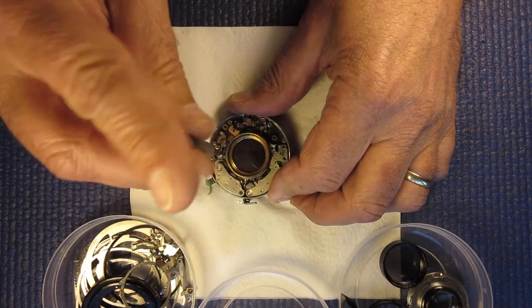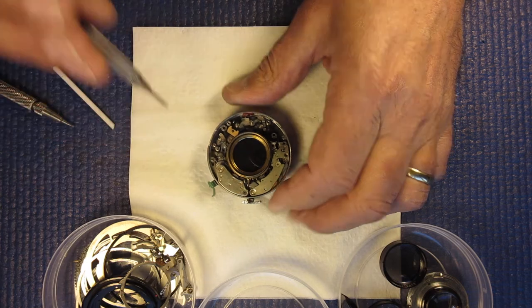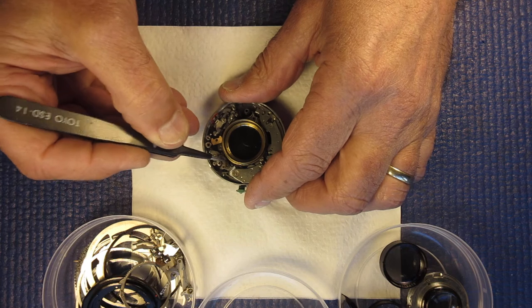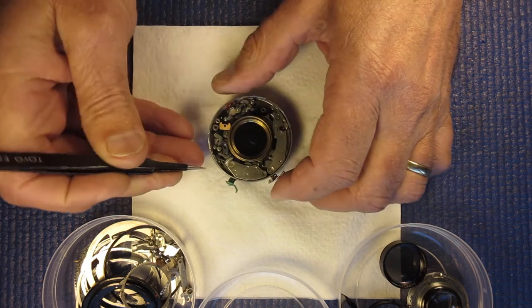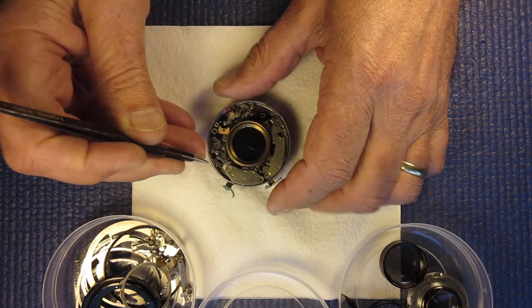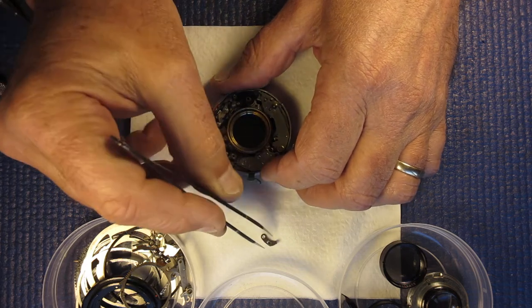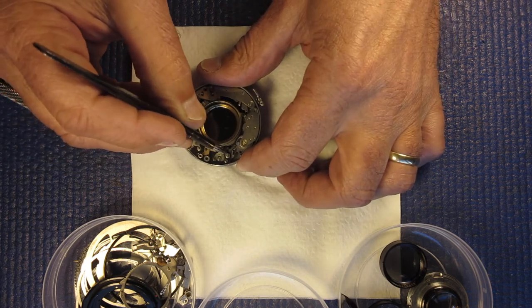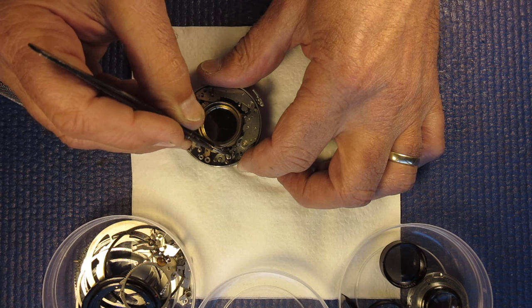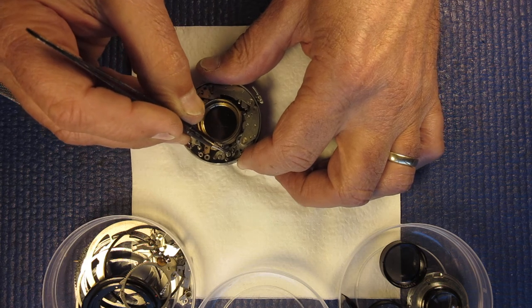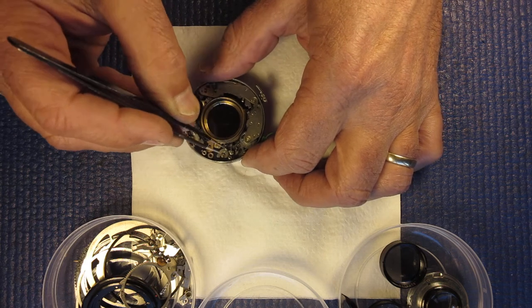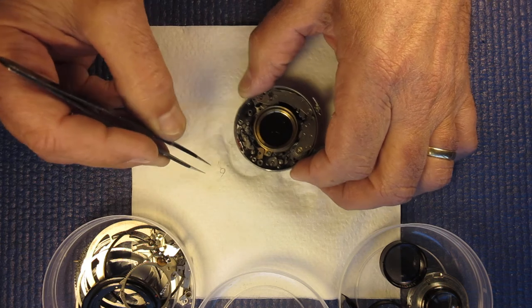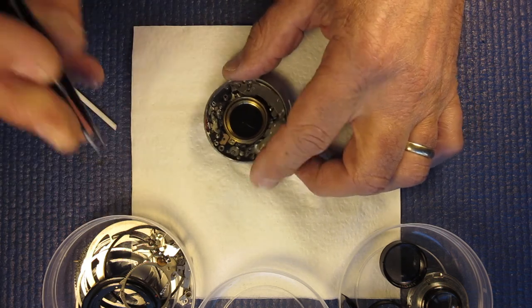I'll remove this screw which holds the B lever in place. That has a spring on it. The spring acts against that post there. There's the B lever. The B lever has its own spring. It's here. It's hooked over that post. Another fine spring. Another one that's keen to get away.